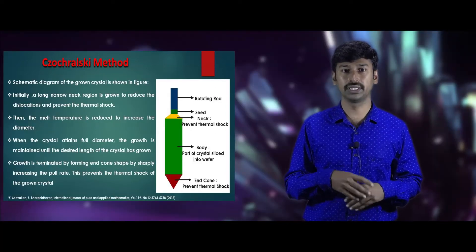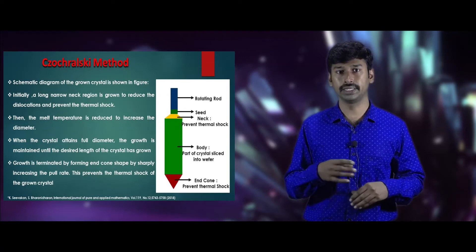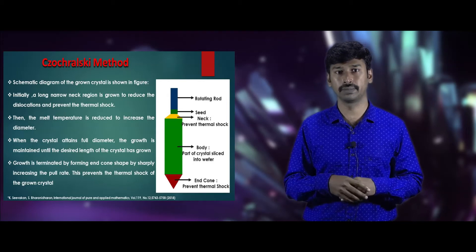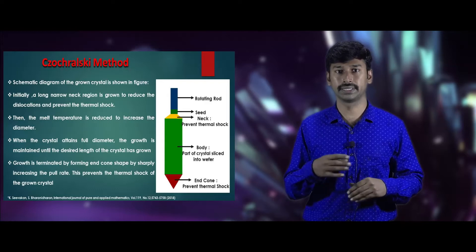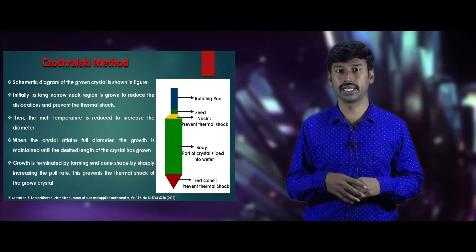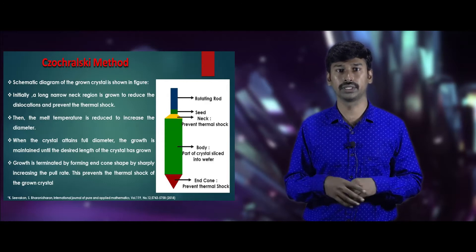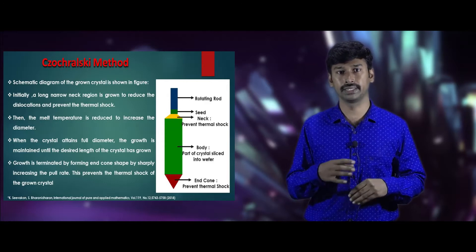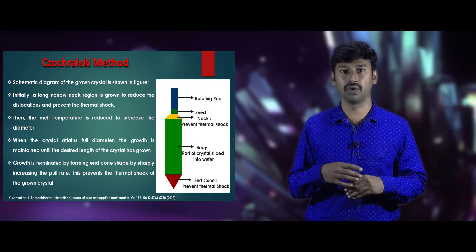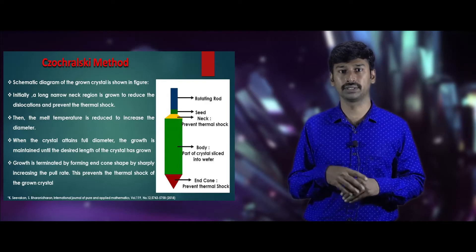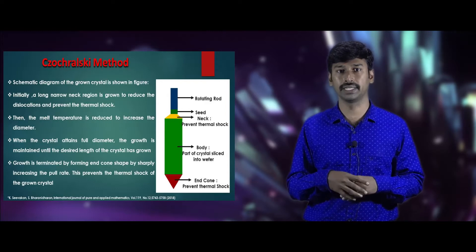The melt and seed rods are rotated in a counterclockwise direction to maintain uniformity of temperature under the melt. As shown in the schematic diagram, initially a narrow neck region is formed to prevent thermal shocking and dislocations of the grown crystal. Then the melt temperature decreases to increase the diameter of the grown crystal. When the crystal attains full diameter, growth is maintained until the desired length is achieved. Finally, growth is terminated by forming an end cone which prevents thermal shocking of the grown crystal.